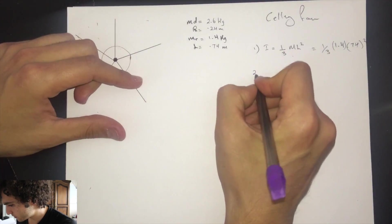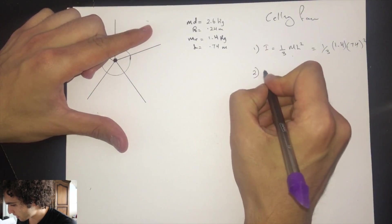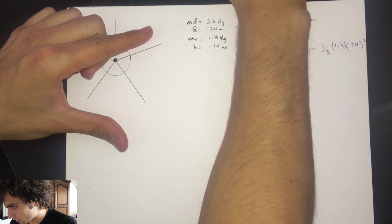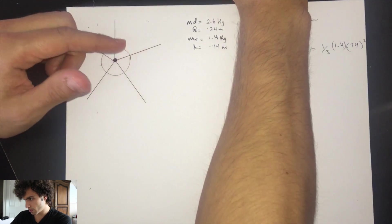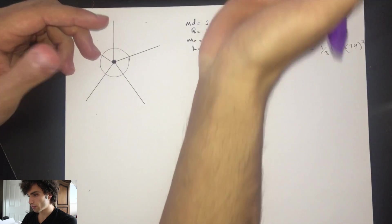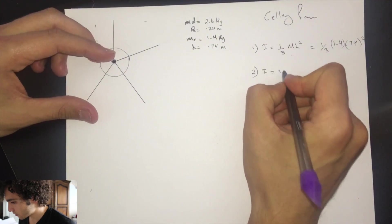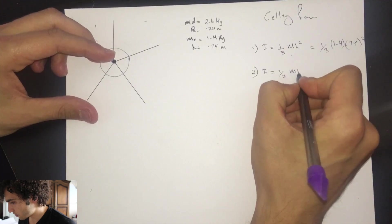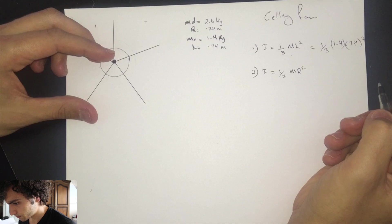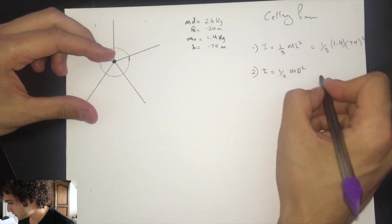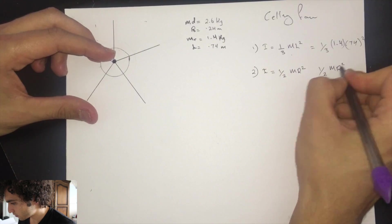The second question asks for the inertia of the disc about the axis of rotation. This is also memorization — the formula is one-half MR squared. So for my values, it's one-half MR squared.